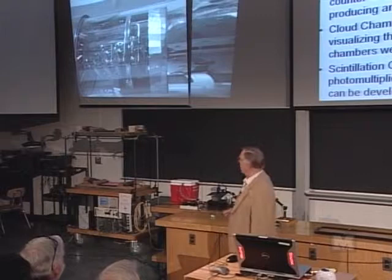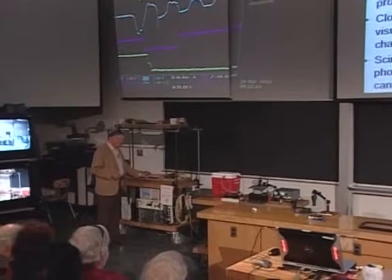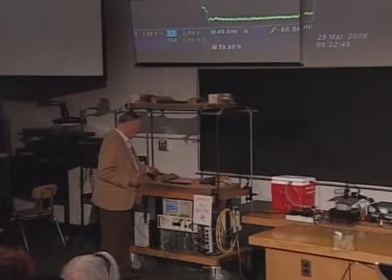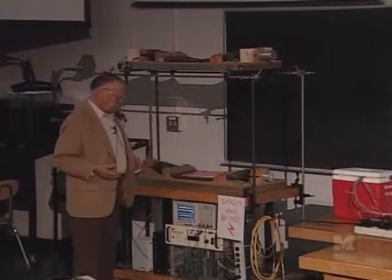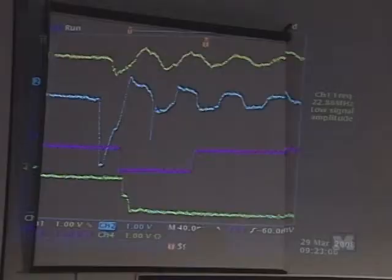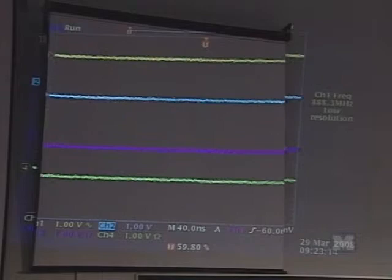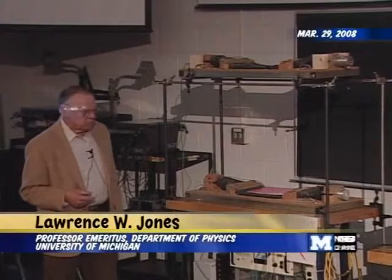We have scintillation counters here — scintillator slabs wrapped in black tape, with a photomultiplier at each side looking through a tapered piece of plastic. A cosmic ray passing through both slabs gives a pulse in each, and the electronics detect when the two pulses are in time coincidence, telling you that a cosmic ray has passed through. The little ticks you hear here are due to cosmic rays.